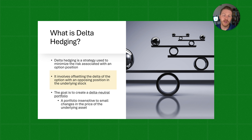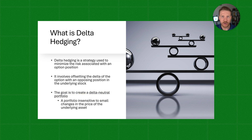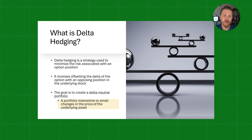If the price goes up, you'll make money on the shares you just purchased while your option position will lose money, but those values should theoretically offset one another. This Delta hedging strategy involves offsetting the Delta of the option with an opposing position in the underlying stock. The ultimate goal is to create a Delta neutral portfolio — a portfolio where the total Delta is equal to zero because you perfectly offset the Delta of both positions.